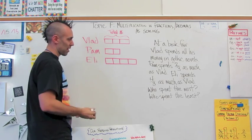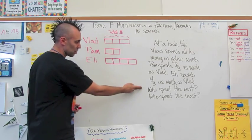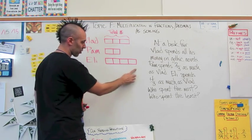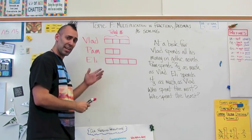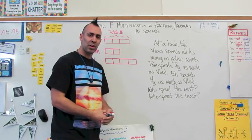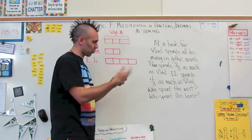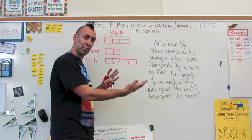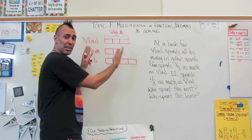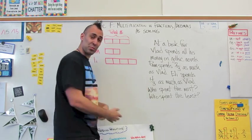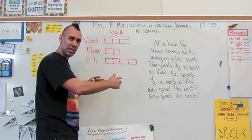Pam's tape diagram shows two-thirds. Eli's, since his is four-thirds, will be one-third more than Vlad and two-thirds more than Pam. By looking at the tape diagrams, it's easy to see that Eli spent the most, since his is four-thirds, and Pam spent the least, having only spent two-thirds the amount that Vlad did. Two-thirds being less than one means Pam's amount is less than Vlad's, and since four-thirds is more than one, that scaling factor makes Eli's amount more than Vlad's.